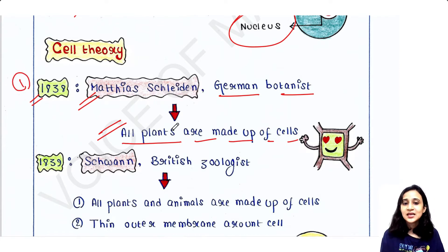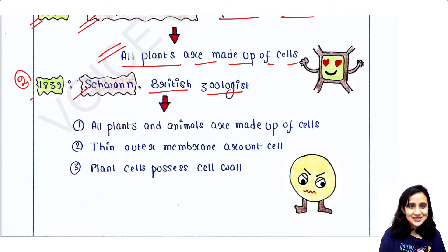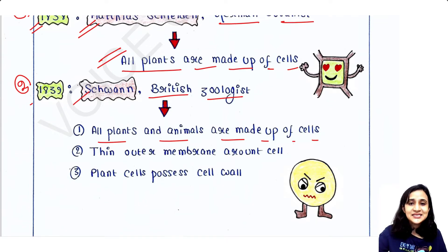This is the first theory. Then at 1839, Schwann, he was the British zoologist. He also concluded cell theory. He said that all plants and animals are made up of cells. So before that, Matthias Schleiden said that plants are made up of cells, but this time Schwann said that plants and animals are made up of cells. And second thing he said that a thin outer membrane is present around the cell.